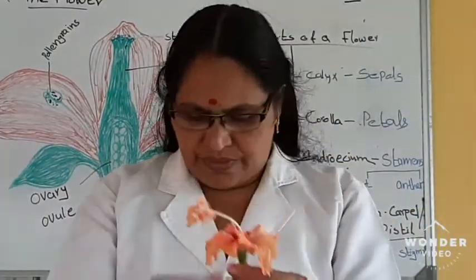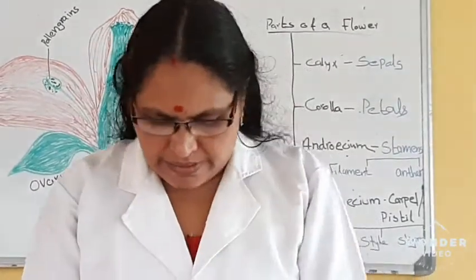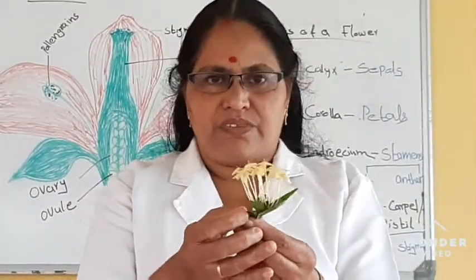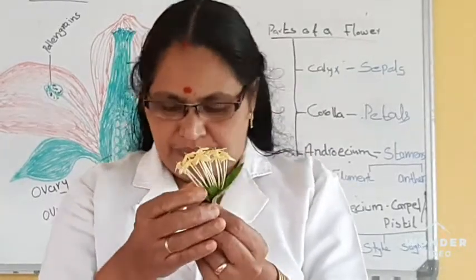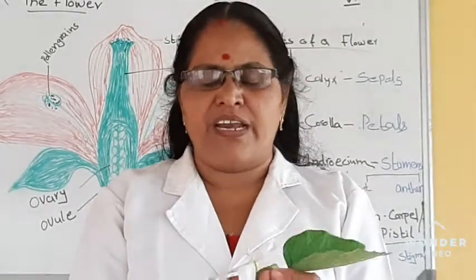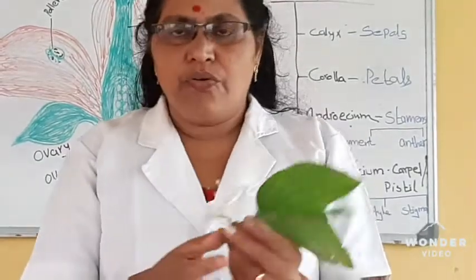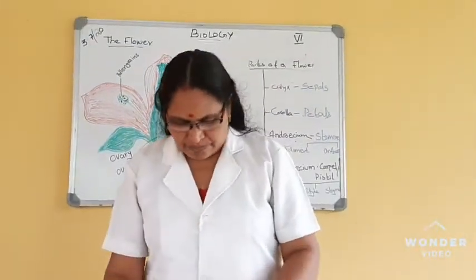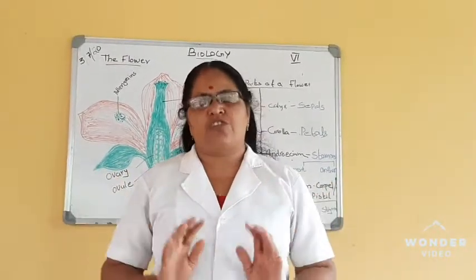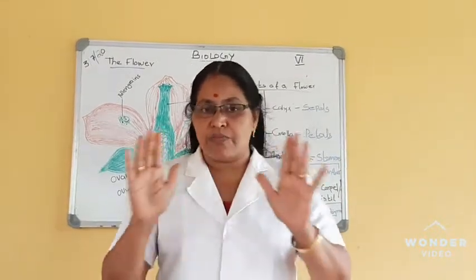And here is another flower — that is also hibiscus. Then this is another type of flower. This is itsora. And here is another type of flower — you can see it is white in color. So you know there are different types of flowers, but basically all the flowers have a common structure.